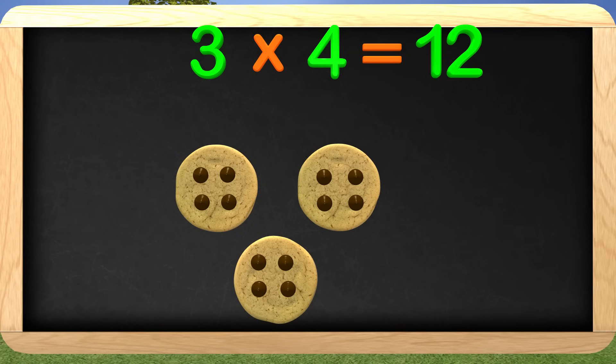The answer is 12. Great job, kids! 3 multiplied by 4 is 12. And we not only know the answer, but we know how multiplication works.